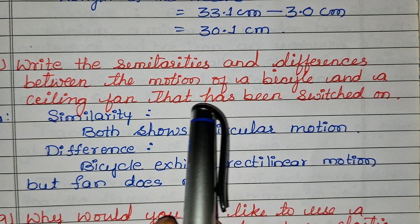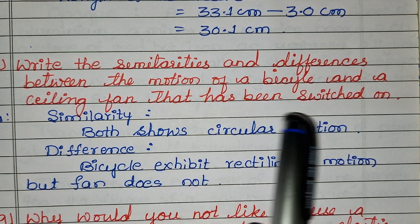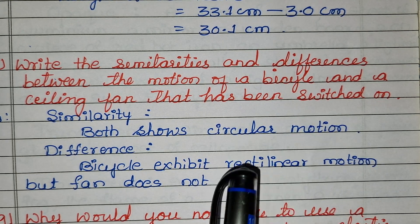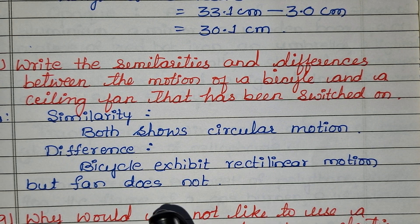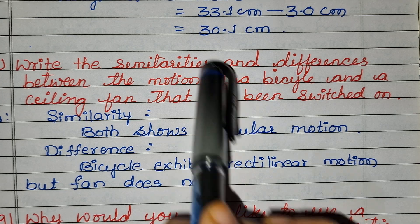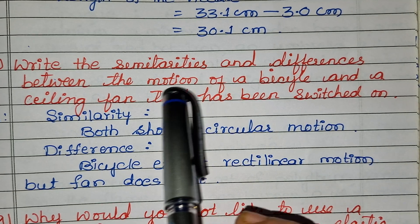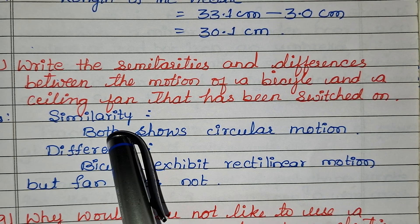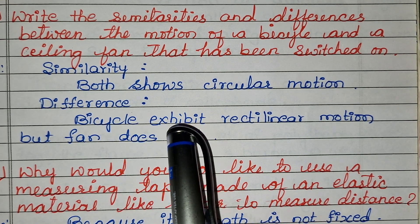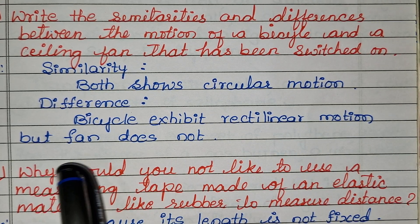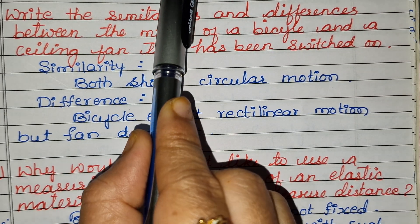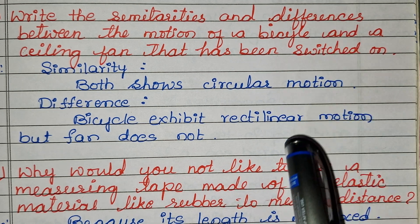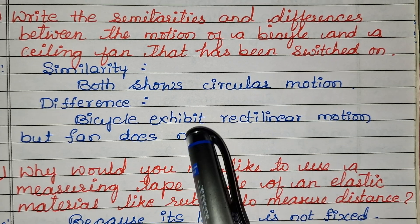Write the similarities and differences between the motion of a bicycle and a ceiling fan that has been switched on. The ceiling fan, when switched on, shows circular motion. The similarity: both show circular motion. The difference: a bicycle also exhibits rectilinear motion as it moves forward, but the fan does not — the fan only exhibits circular motion.